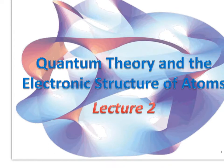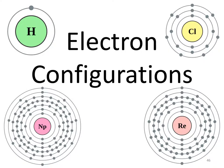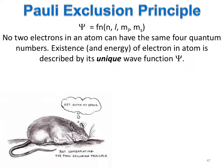Welcome to Lecture 2, Part 3, which is on Electron Configurations. The Pauli Exclusion Principle states that no two electrons in an atom can have the same set of four quantum numbers. The existence and energy of an electron in an atom is uniquely described by its wave function.